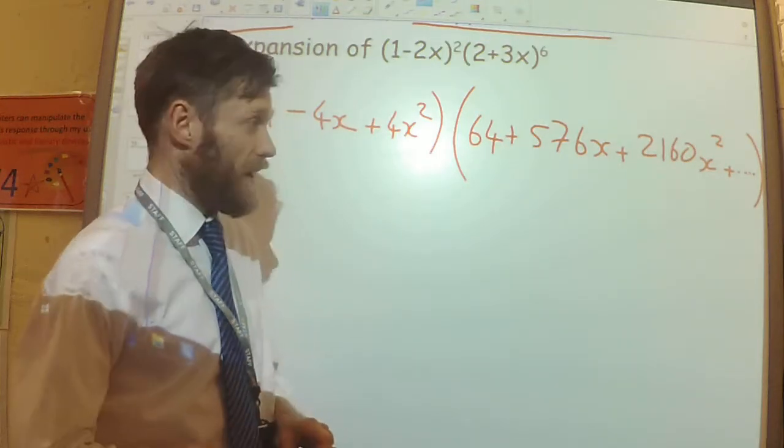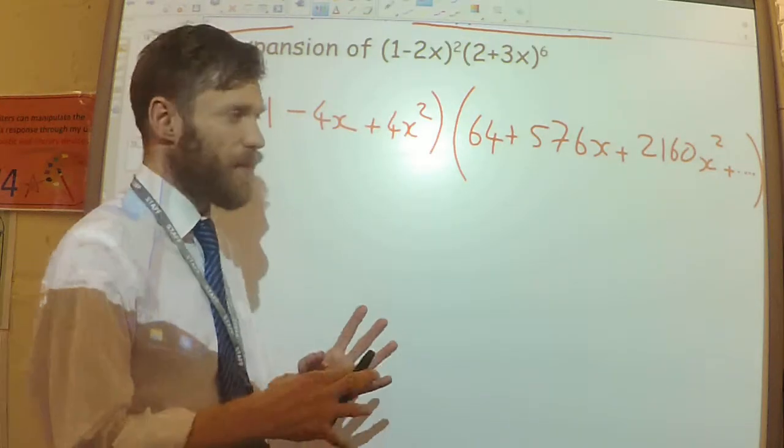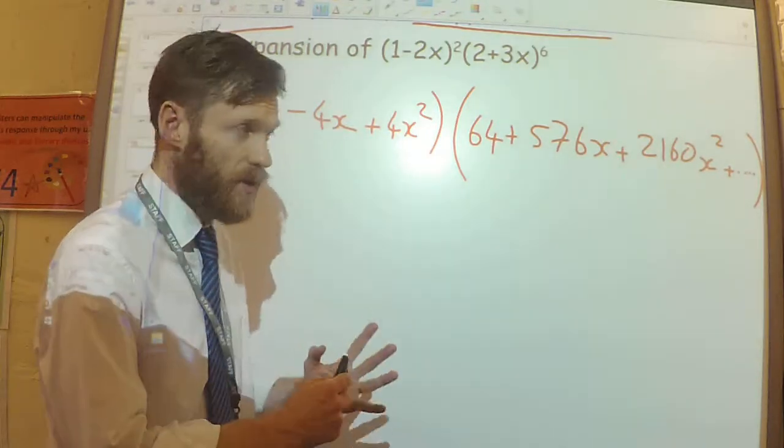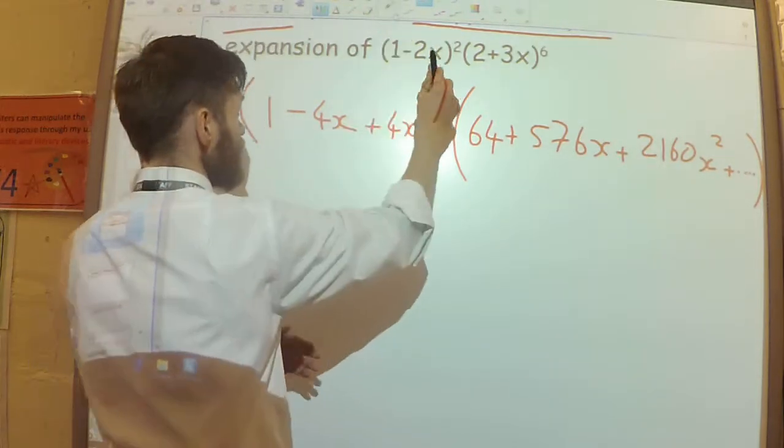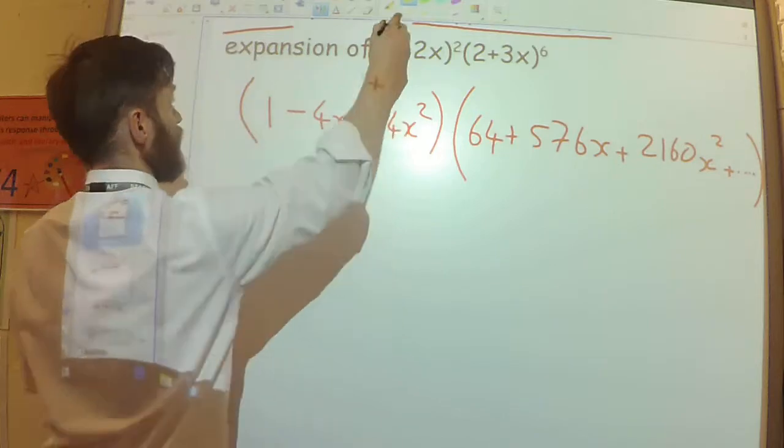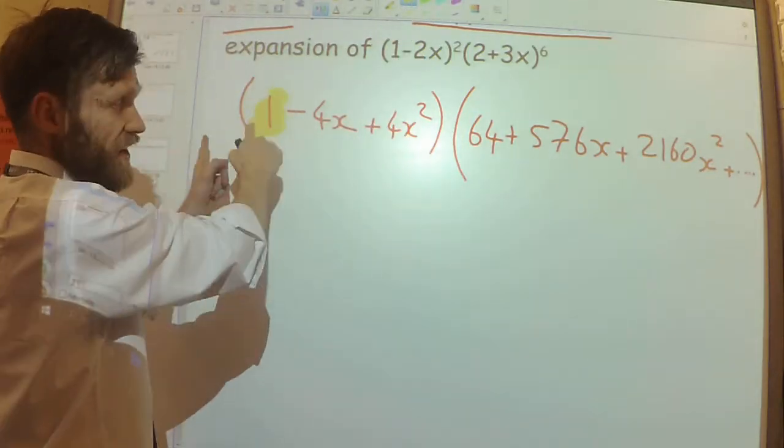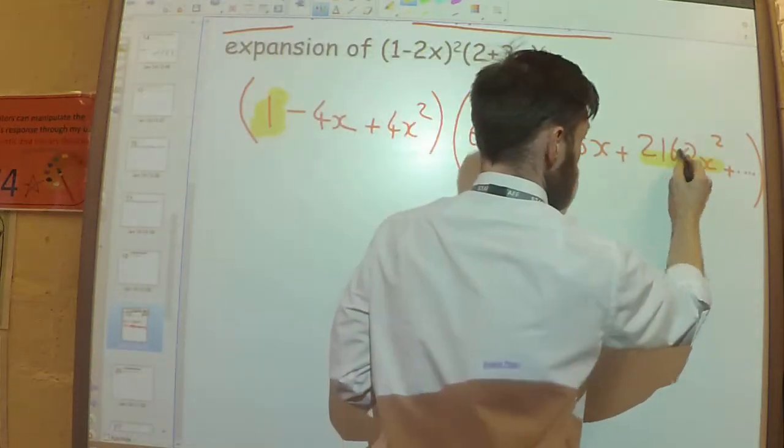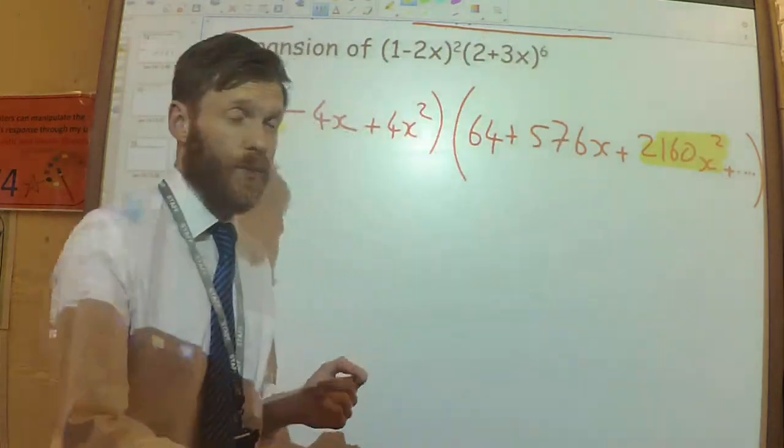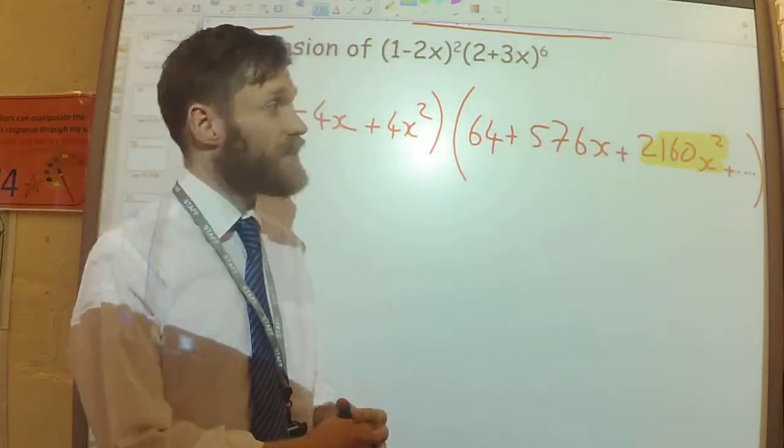And it's really important you think carefully about this because so often people make a silly mistake by missing one of them off. Let's go through here and I'll just highlight them for now. The 1, if I times that by the 2160x squared, that would give me an x squared term.